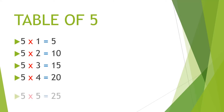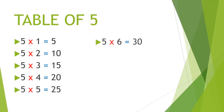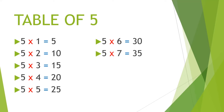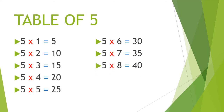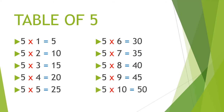Multiplication table of 5. 5 1's are 5, 5 2's are 10, 5 3's are 15, 5 4's are 20, 5 5's are 25, 5 6's are 30, 5 7's are 35, 5 8's are 40, 5 9's are 45, 5 10's are 50.